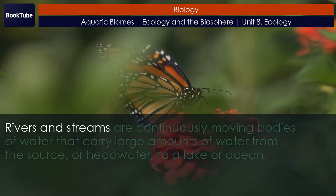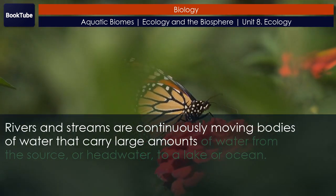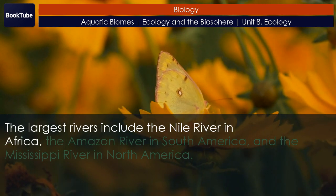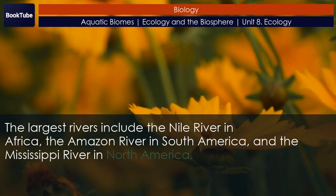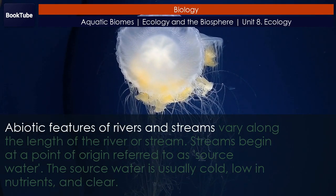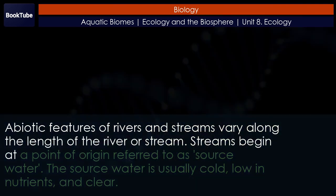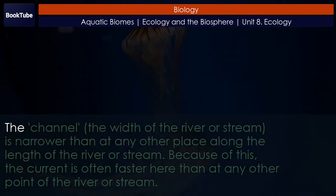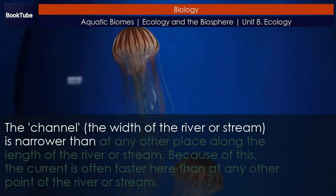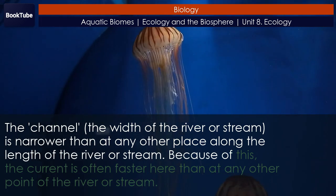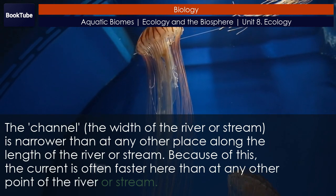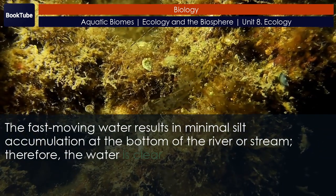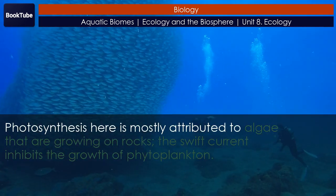Rivers and streams are continuously moving bodies of water that carry large amounts of water from the source — or headwater — to a lake or ocean. The largest rivers include the Nile River in Africa, the Amazon River in South America, and the Mississippi River in North America. Abiotic features of rivers and streams vary along the length of the river or stream. Source water is usually cold, low in nutrients, and clear. The channel is narrower than at any other place along the length of the river or stream, so the current is often faster here, resulting in minimal silt accumulation at the bottom and clear water.